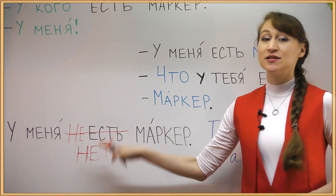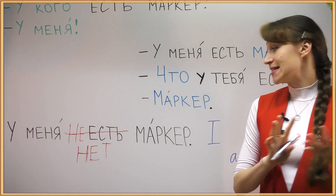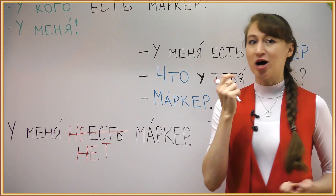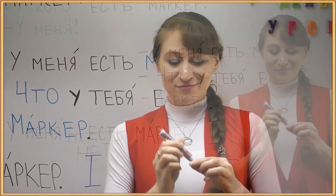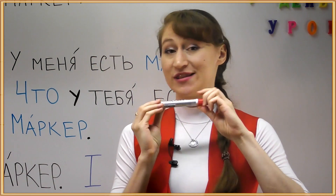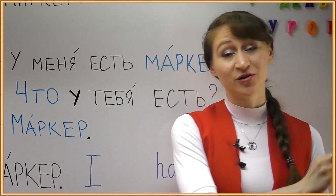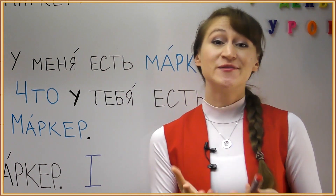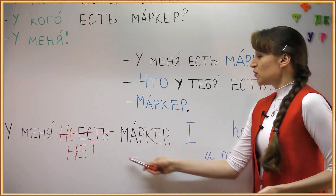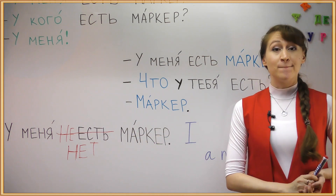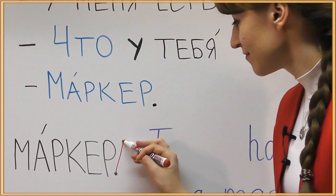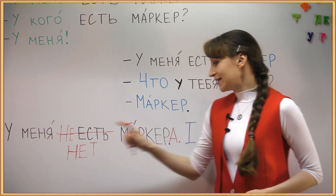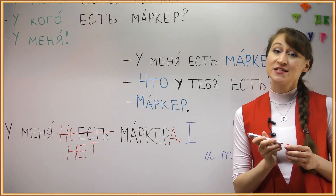НЕТ means non-existence — something doesn't exist, or literally 'there is no of something.' There is no marker in my world. Now since marker is gone, there is no subject. The subject is gone from the sentence. We need to mark this fact, and so we change the form of the word MARKER. It becomes MARKERA. У МЕНЯ НЕТ MARKERA.